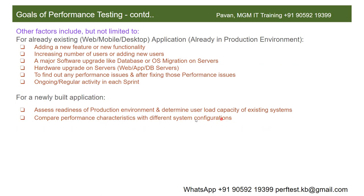We discussed what is meant by system configuration. System configuration means CPU and memory — not only hardware configuration, but software configuration as well. The operating system matters, and whether it supports the application or not. So software configuration also matters a lot.